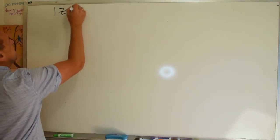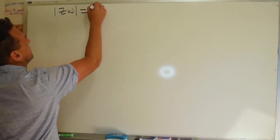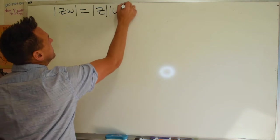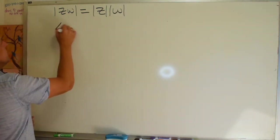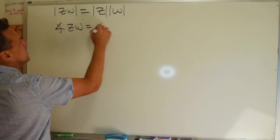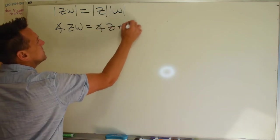Let's just write these things down. So the magnitude of Z times W is equal to the magnitude of Z times the magnitude of W. And the angle of ZW is equal to the angle of Z plus the angle of W.